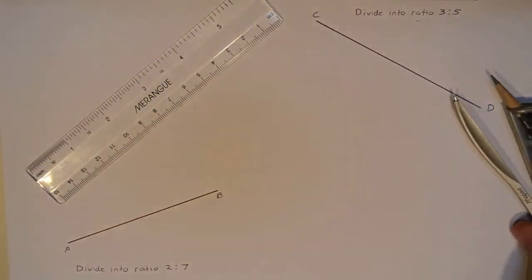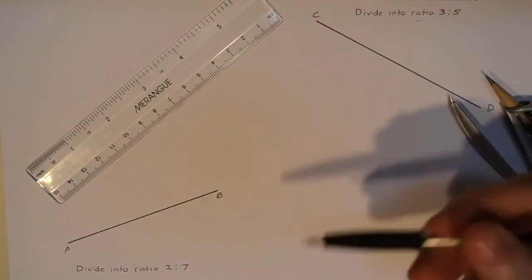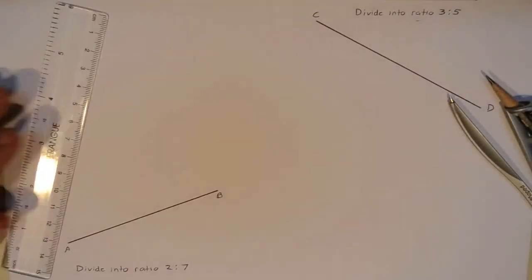Now, this is a pretty clever construction because what we're going to do is essentially create a set of similar triangles and take advantage of the properties of similar triangles.